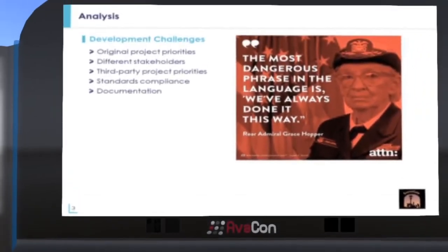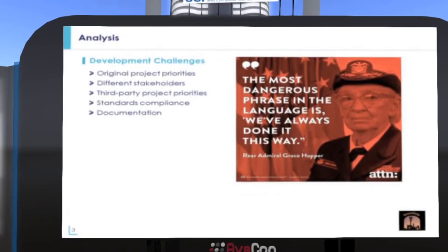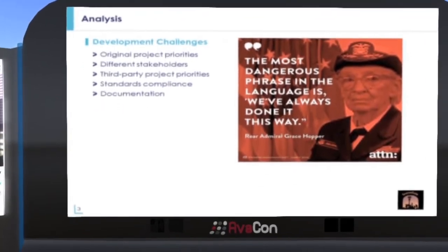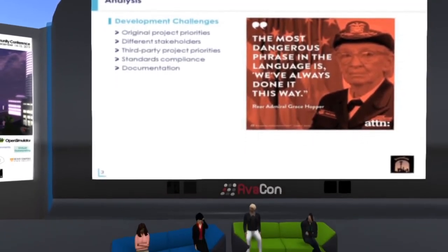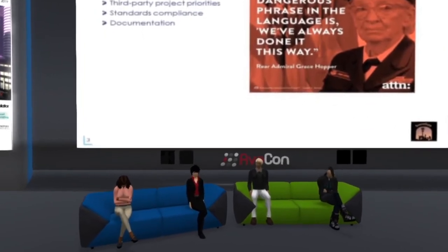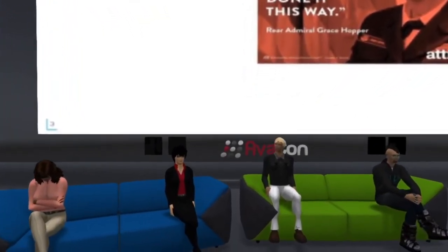During our analysis, non-trivial challenges in development were found. The original Linden Labs source code project developers have priorities related to their business focus, and the Open Simulator stakeholders are not a consideration for those original source developers. Existing third-party viewer project developer priorities are divergent — everybody has a different idea of where they want to go. The lack of standards compliance impacts interoperability with other applications like 3D modelers or screen readers and other devices or software applications that assist users. The documentation is non-existent or not up to date.